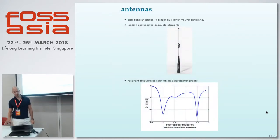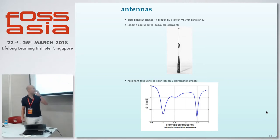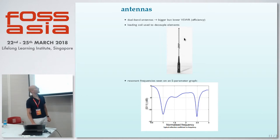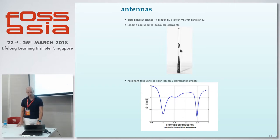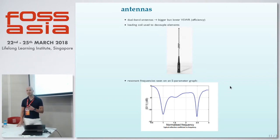On antennas: typically you'll see some routers with dual-band antennas. Interestingly, how it works is you have a loading coil in the middle, with one part of the antenna optimized for a certain frequency — a quarter of the wavelength — and then a second, different wavelength section. On a graph, the antenna resonates at two different frequencies. That's how multi-band antennas work.